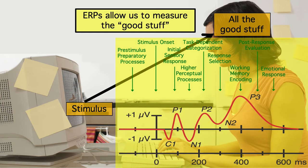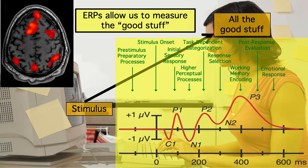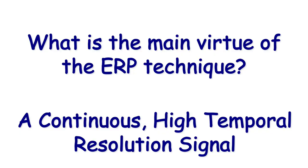A huge number of brain processes occur in the several hundred milliseconds between a stimulus and a response, and ERPs allow us to unpack these processes. In fMRI, all these processes are collapsed into a single time slice — that would be like taking all the frames from a 6-second period of a movie and averaging them into a single frame. So it's not just that ERPs have high temporal resolution, so does response time. The key is that ERPs provide a continuous measure with high temporal resolution.